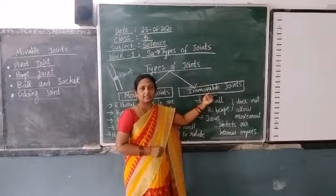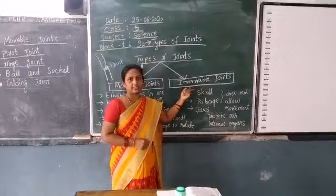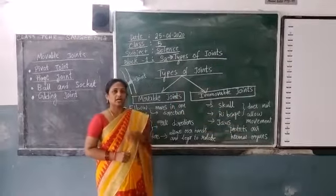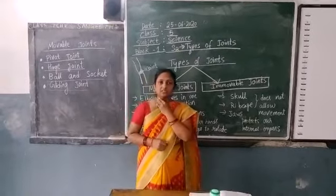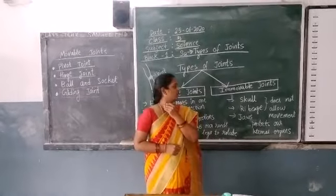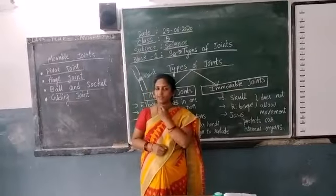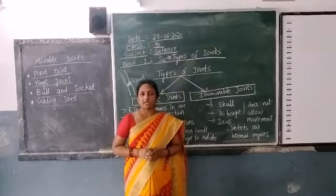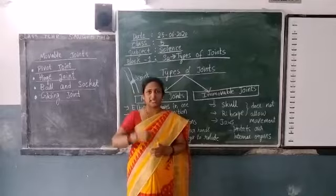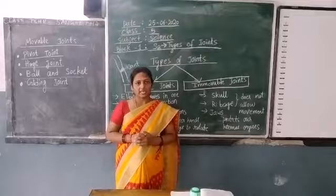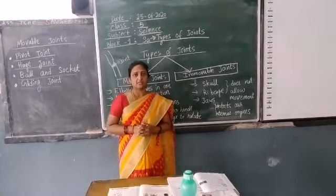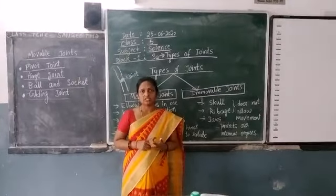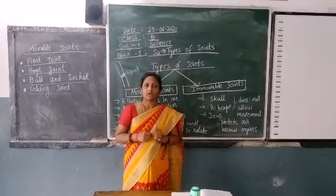Joints that do not allow movement at that joint point, we are calling immovable joints. Our skull region is an immovable joint — it does not allow movement. Now come to the neck region. Can we turn our head backward? No, we cannot turn it backward. We can only move our head sideways. That means our neck region will allow movement only sideways. So this allows movement and comes under movable joints. The neck region shows movement, so it is a movable joint.